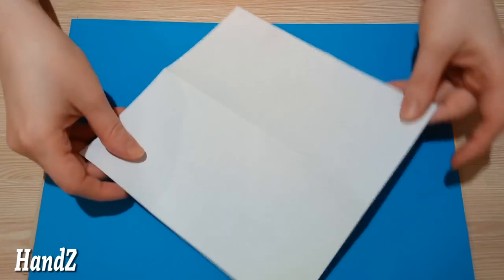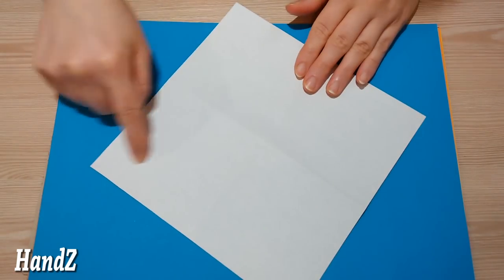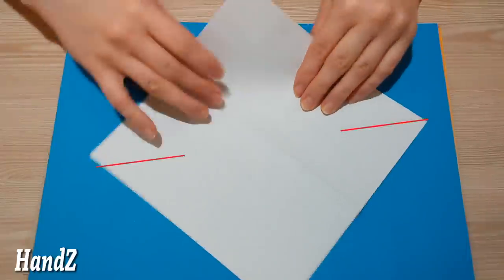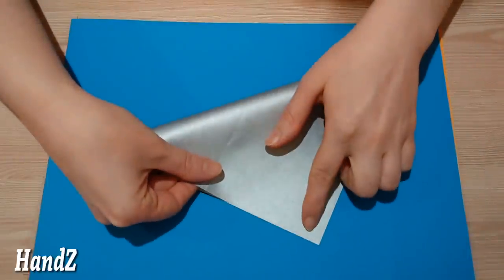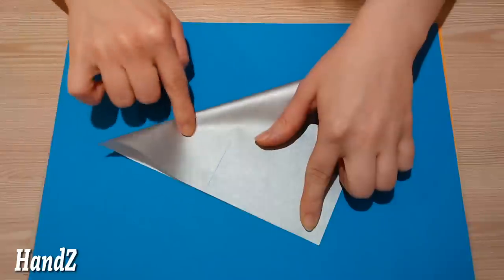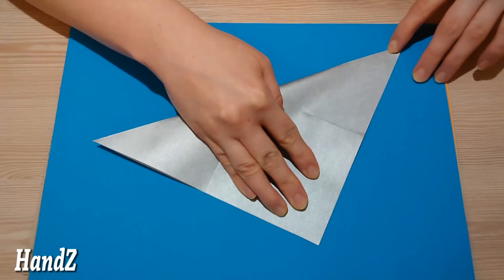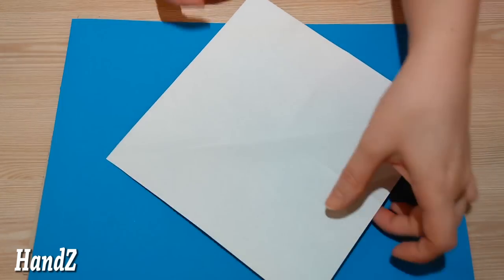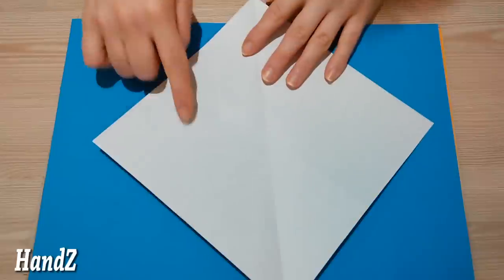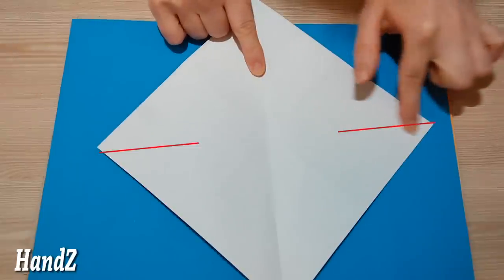Turn the paper over to the white side. Fold the paper diagonally and make two short creases. And fold the paper diagonally in the opposite direction.